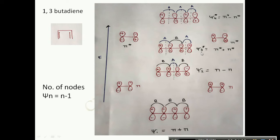The third molecular orbital is formed by the combination of two anti-bonding orbitals of ethylene. It has two anti-bonding interactions and one bonding interaction, so it has slightly higher energy than psi 2. It has two nodes. Psi 4 is highest in energy because it is formed by only anti-bonding interactions between the p orbitals.